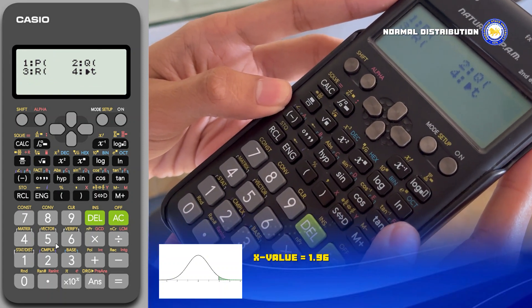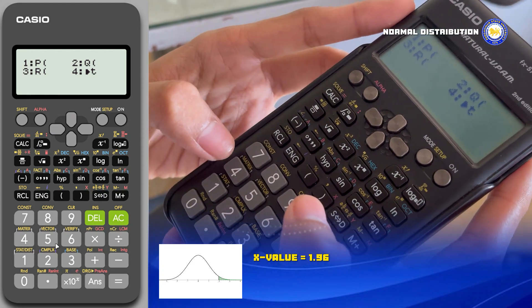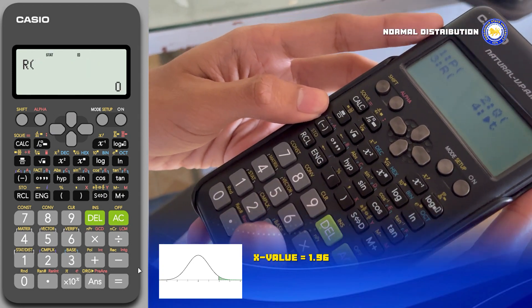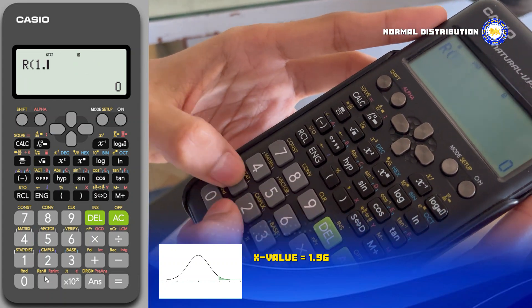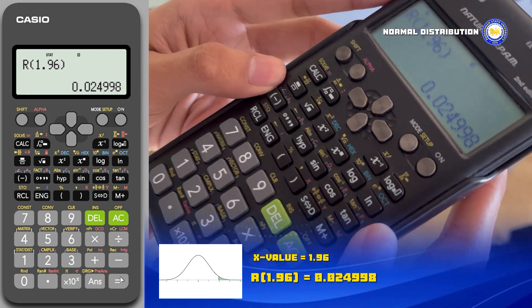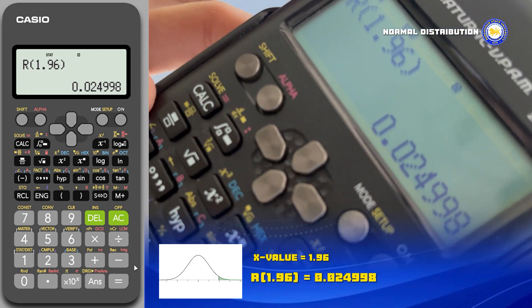Lastly, on our last problem we can see the diagram is shaded to the right with the value of x which is 1.96 again. Now following our instruction again, choose R, number 3, and input the value of x which is 1.96, and we will get the answer which is 0.024998.